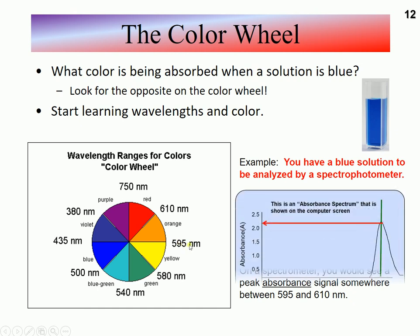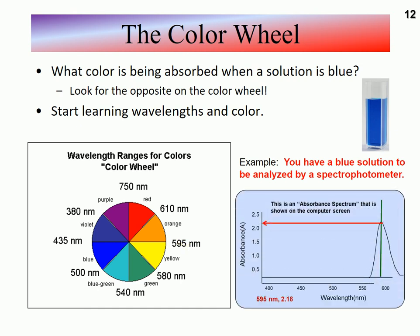So if you were to put this in a spectrometer you'd probably see a spectrum that looks like this, where there's a nice peak of absorption near 600 and it would probably be pretty high depending on how concentrated the sample is.